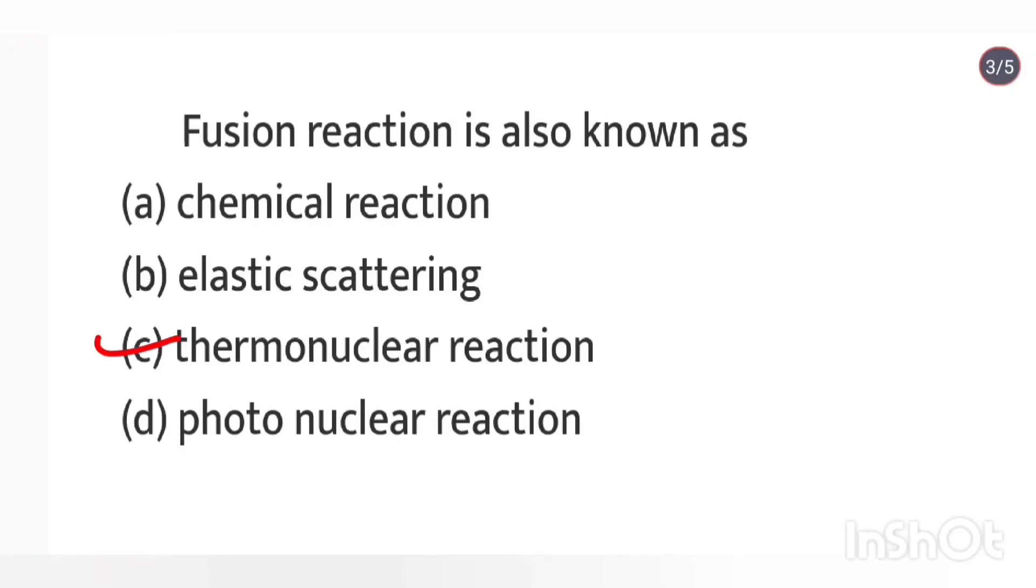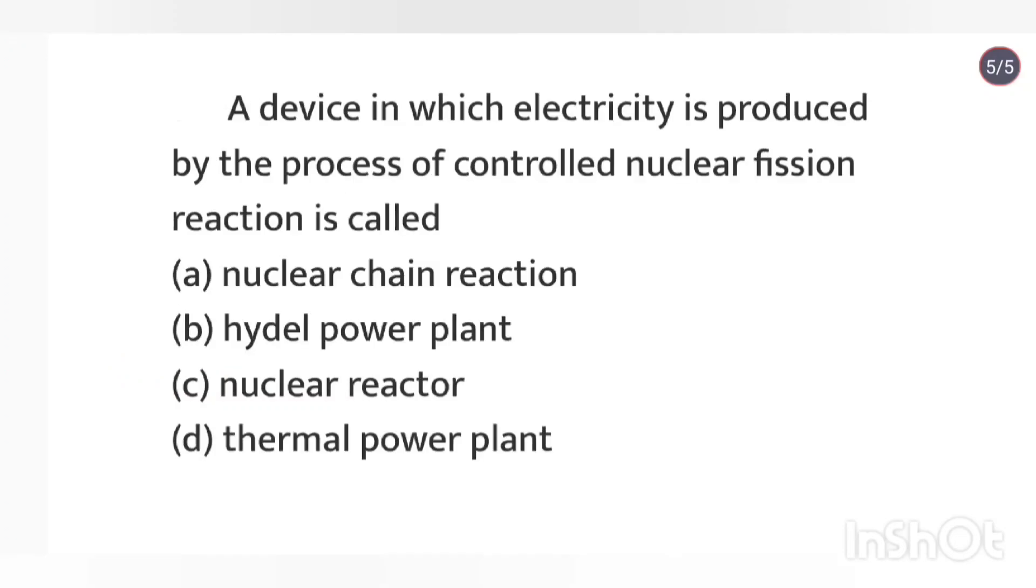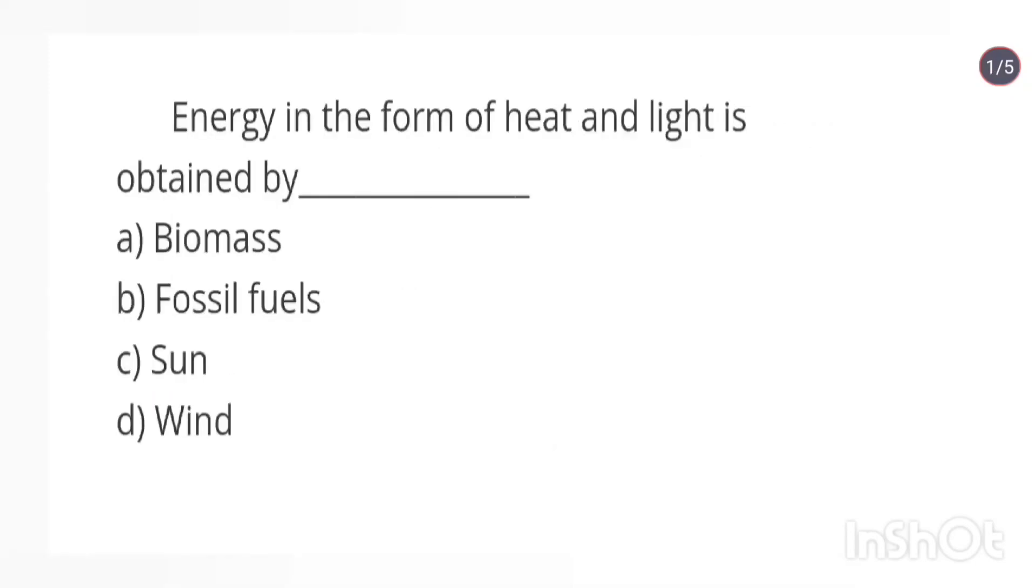Which of the following is not an example of biomass energy? Nuclear energy. A device in which electricity is produced by the process of controlled nuclear fusion reaction is called a nuclear reactor. Energy in the form of heat and light is obtained by energy of the sun.